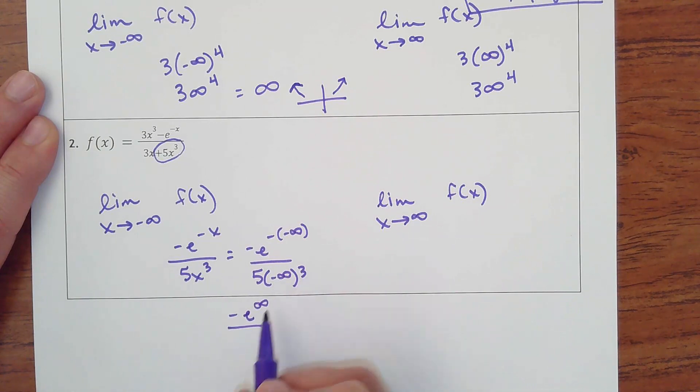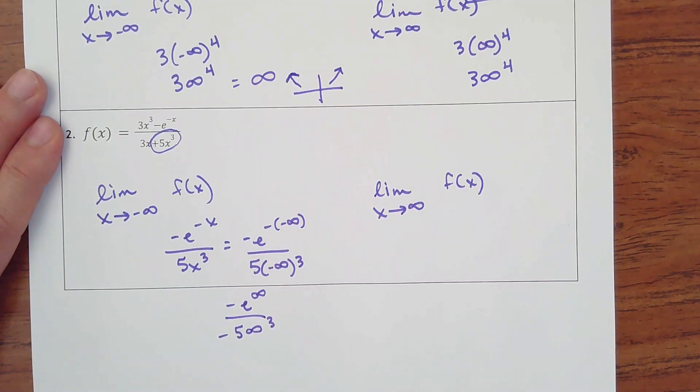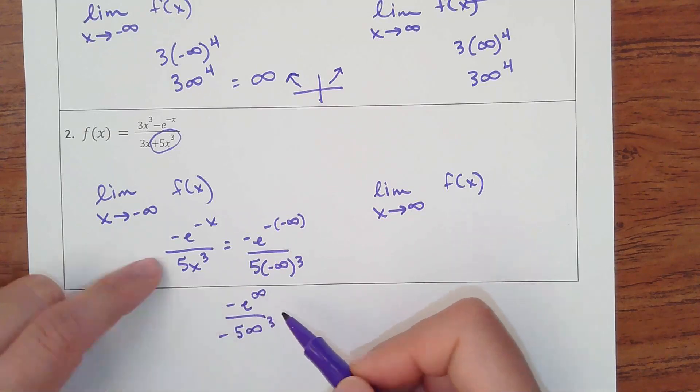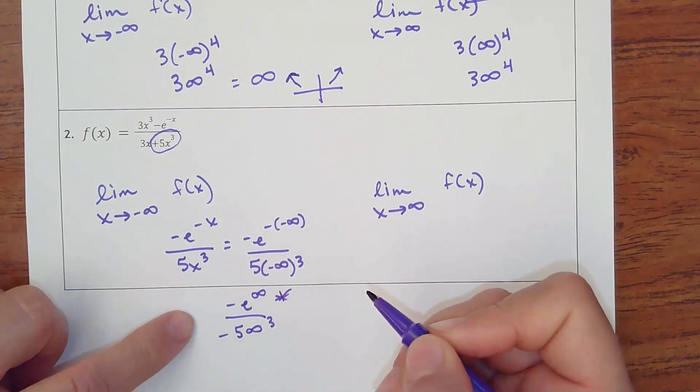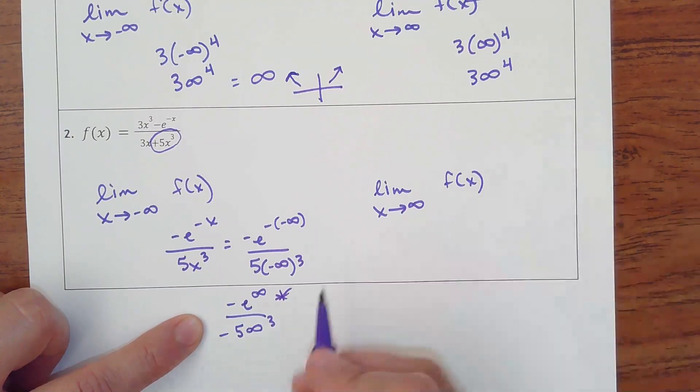Negative number to the third power would be a negative. Okay, you've got to figure out is top or bottom bigger. This e to the power is going to be bigger. So it's top heavy. So that's going to go to positive or negative infinity. We don't care about that. They just want horizontal asymptotes.